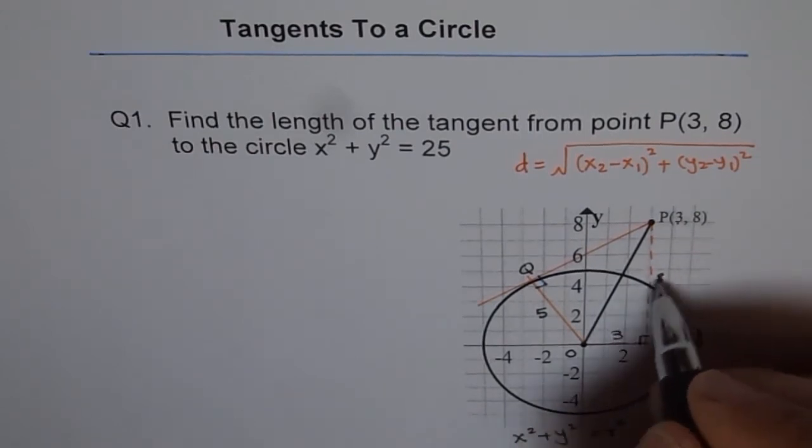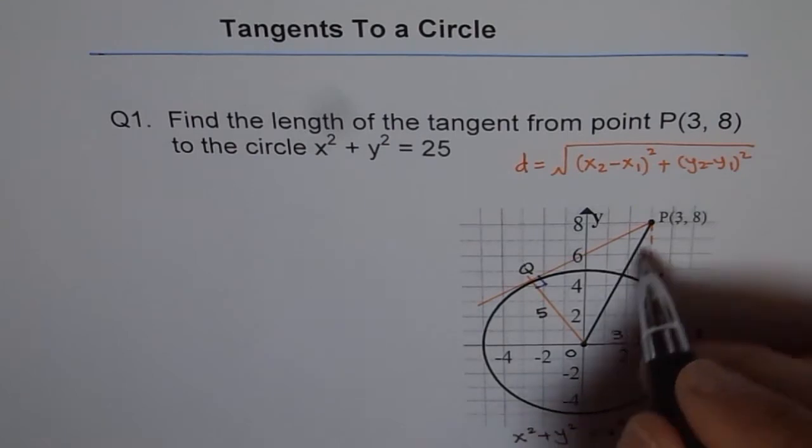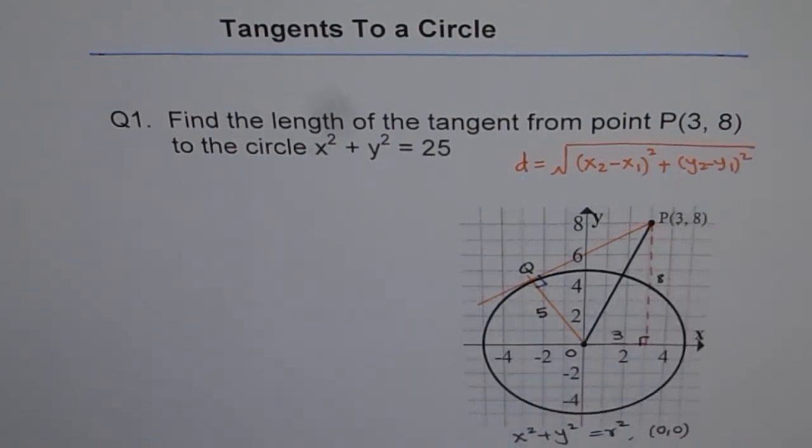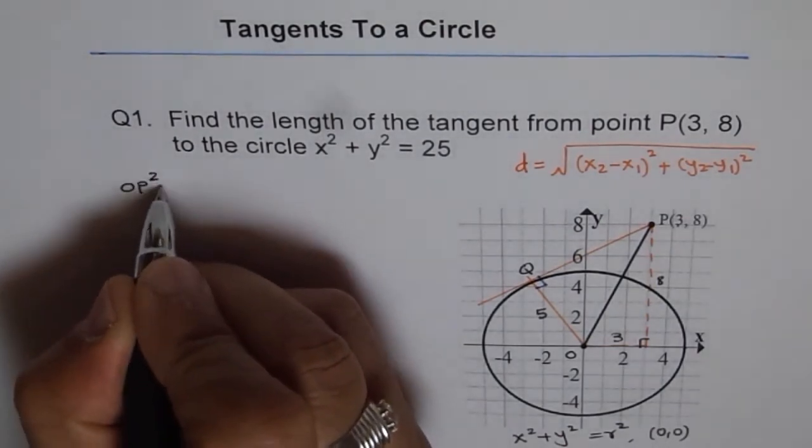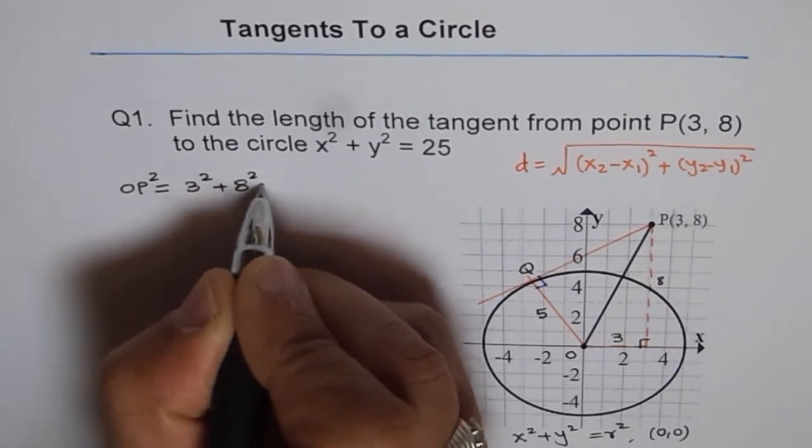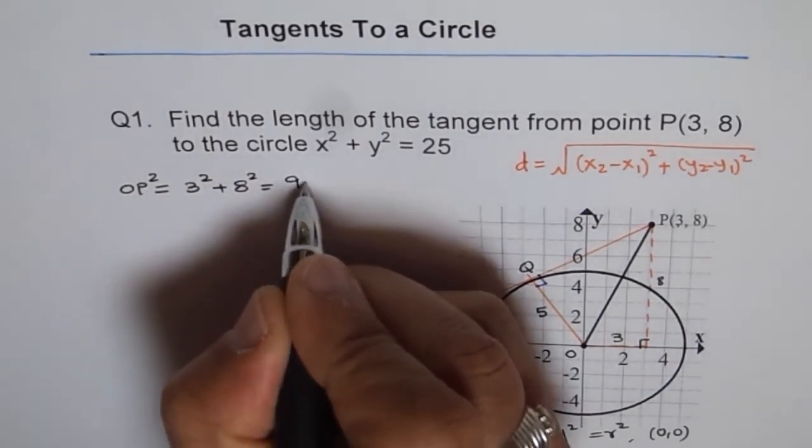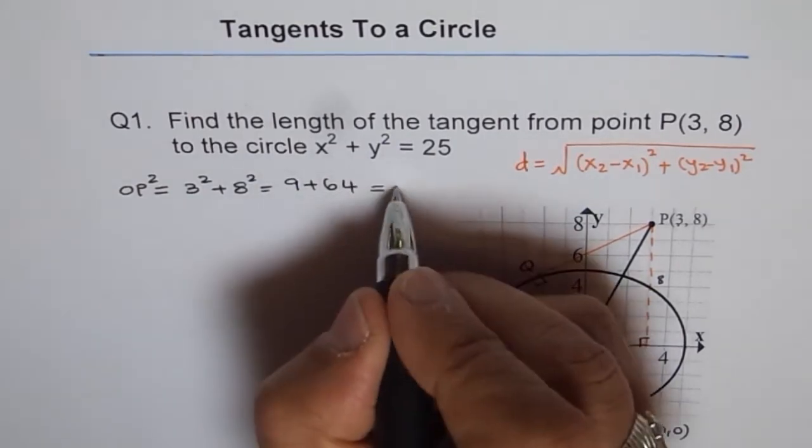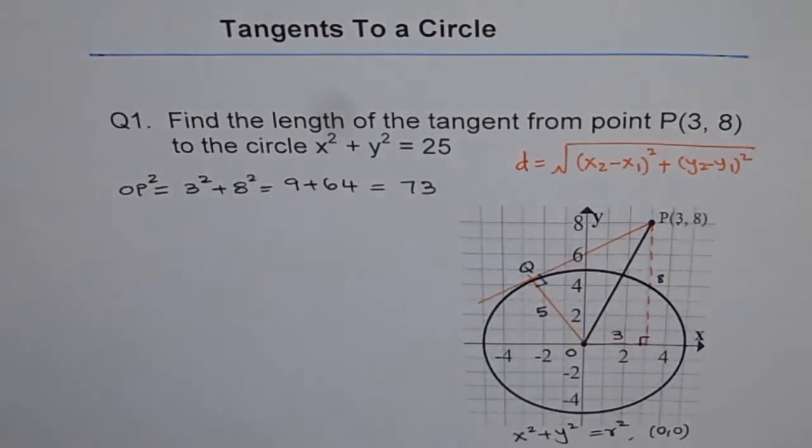Now, 3 and 8, their squares, when added, will give a square of OP. That's the Pythagorean theorem. So we'll use that basic theorem. We say OP square is equals to 3 square plus 8 square. Now, 3 square is 9, 9 plus 64, and then when you add it, we get 73. So we get 73 as OP square.